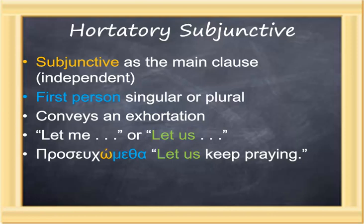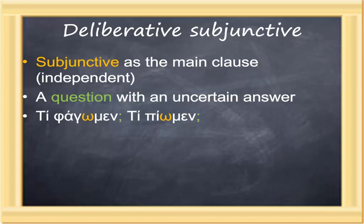The deliberative subjunctive is a second example of a subjunctive functioning as the main clause of a sentence — an independent clause — in the form of a question with an uncertain answer. For example: τί φάγωμεν — notice it's subjunctive, long connecting vowel, it's a question — "What shall we eat?" τί πίωμεν — "What shall we drink?" The answer is uncertain; therefore the question is deliberative and done with the subjunctive.